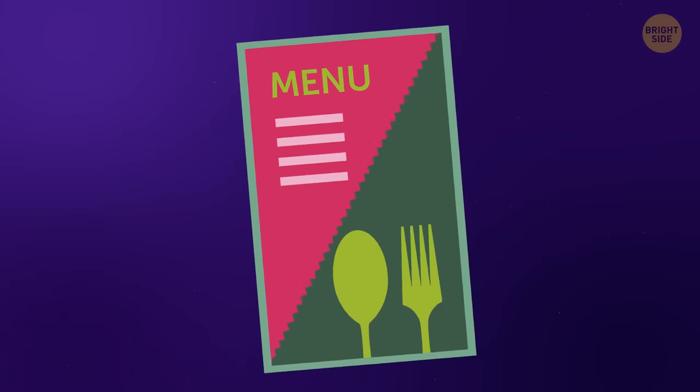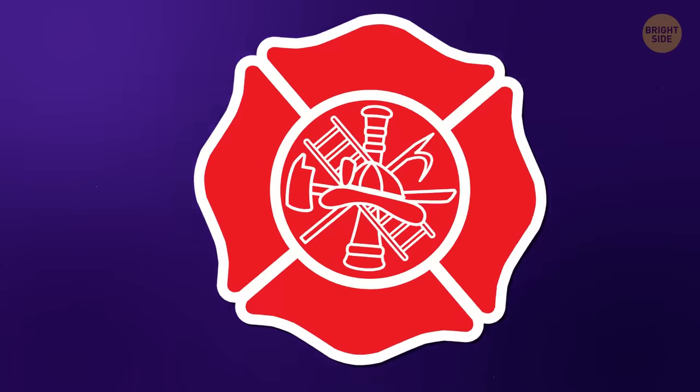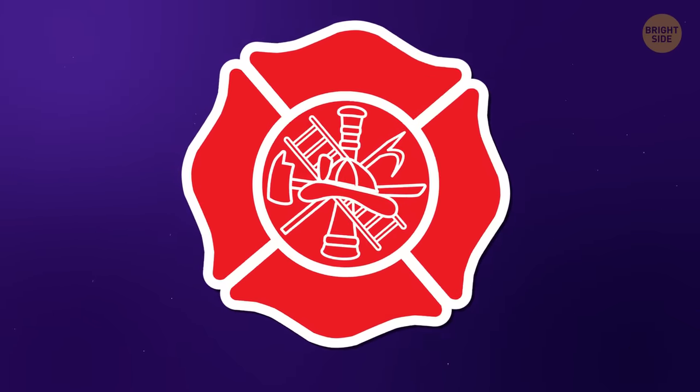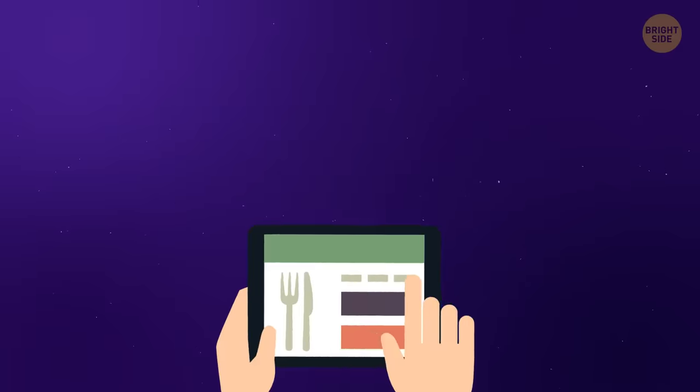Number 24: Takeout menus. Takeout menus are like emergency service phone numbers. You need to know they're there. But with all the takeout places having their menus online, there's no reason to keep them.